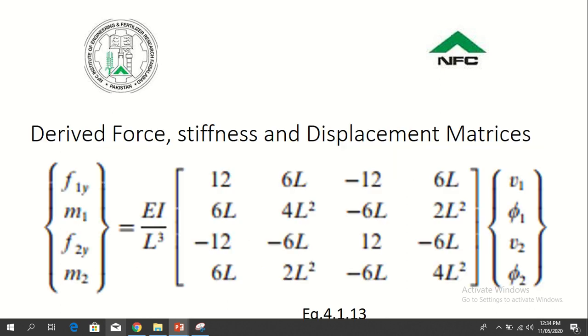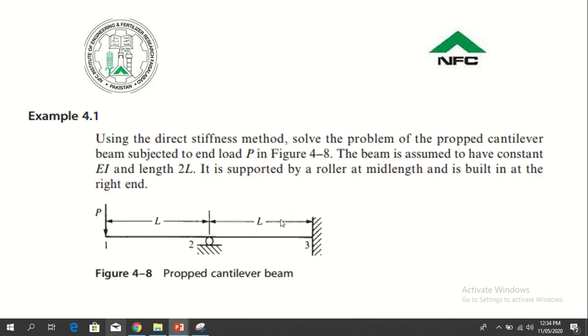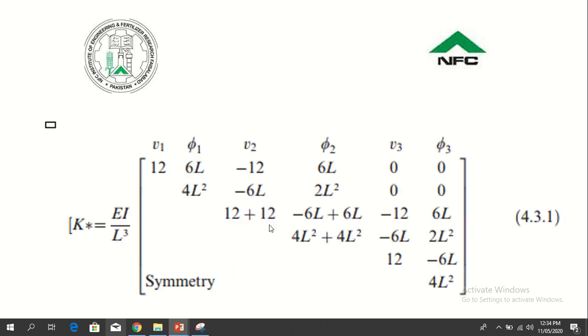We will use this formula for K matrix and we will write the K matrix for each element, for element 1 and element 2. After writing the K matrices for element 1 and element 2, you will add these two matrices to form the global stiffness matrix.